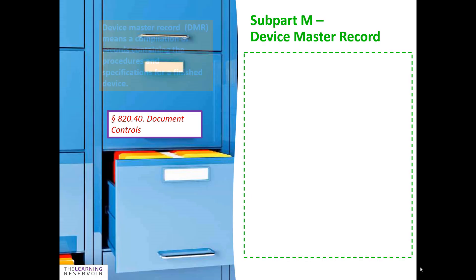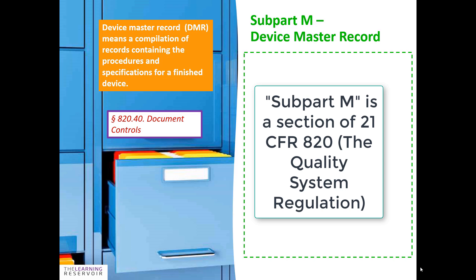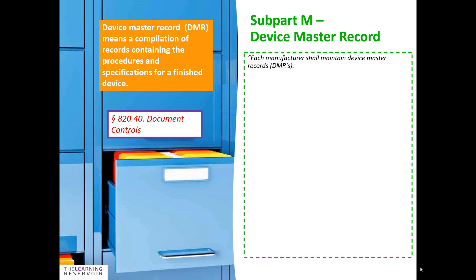Within Part M it states that you have to have a device master record. A device master record means the gathering of all the records containing the procedures and specifications for a finished device. In the regulation it states that each manufacturer shall maintain device master records, and each manufacturer shall ensure that each device master record is prepared and approved in accordance with §820.40.